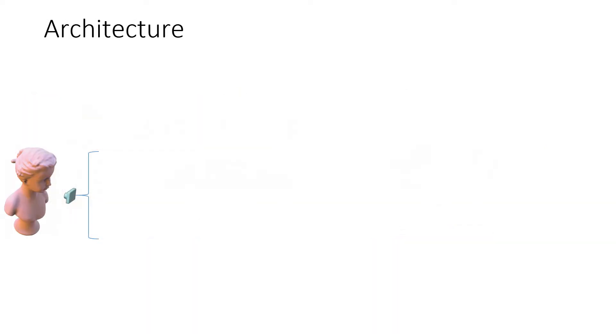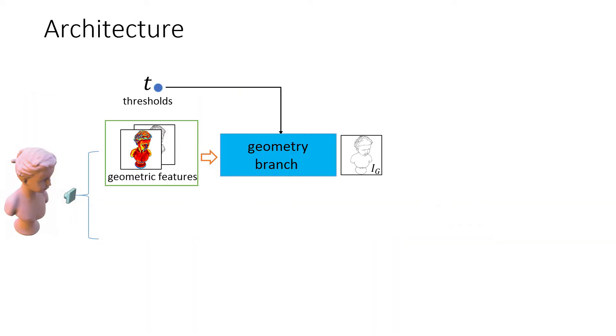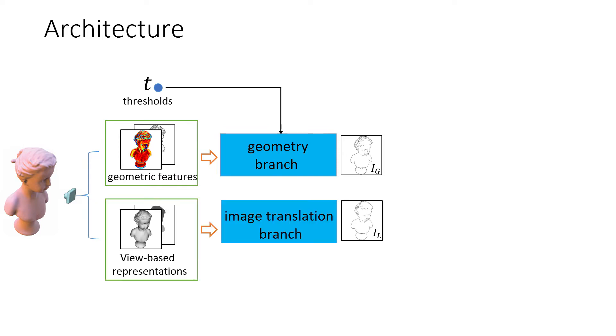Our network incorporates a differentiable module operating on the mesh to extract geometrical lines that make use of 3D surface information. Our method also processes view-based representations with an image translation module to produce lines related to shading.